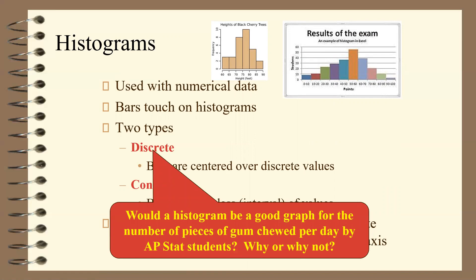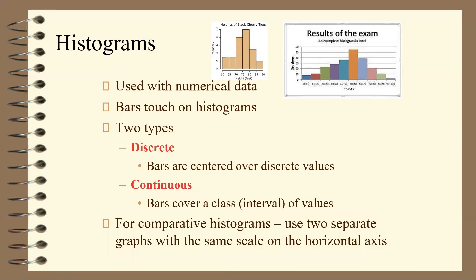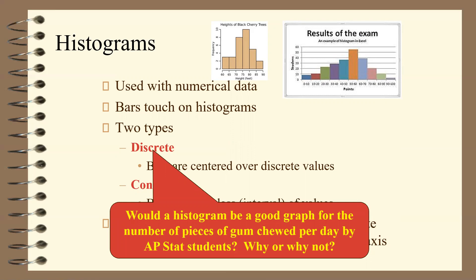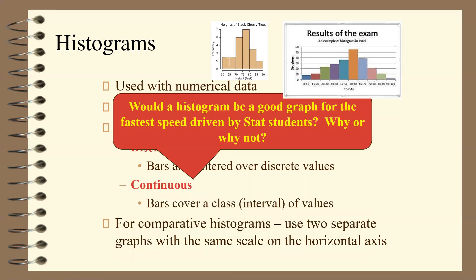Would a histogram be a good graph for the number of pieces of gum chewed per day by AP Statistics students? Probably not — pieces of gum will be zero, one, two, three, and so forth, so there probably aren't enough different values to make a useful histogram. But would a histogram be good for the fastest speed driven by Statistics students? Yes — everyone could have a very different answer, with a wide range of values, so a histogram would work well there.